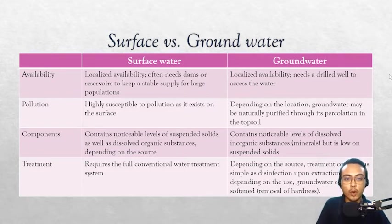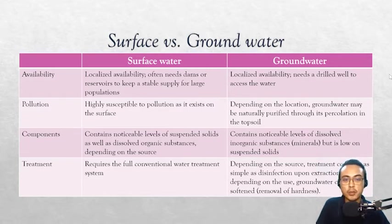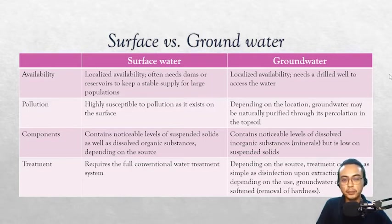Both surface water and groundwater have localized availability. While surface water is easier to spot, groundwater sources can be more reliable. Groundwater remains a crucial resource for many rural areas of the Philippines and even some parts of Metro Manila, because it is more stable and readily available once you have a drilled well. However, surface water is much more advantageous for supplying a large population, since its supply can be controlled by building dams or reservoirs.